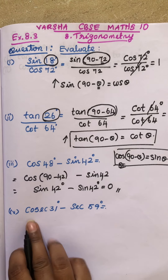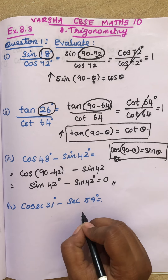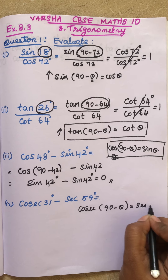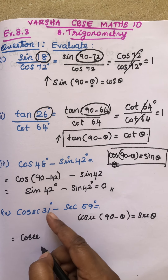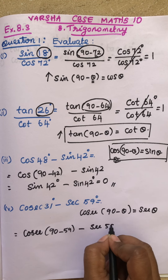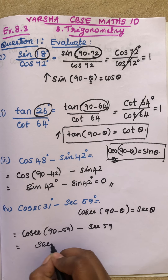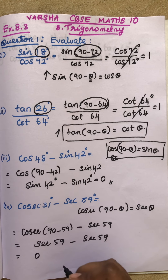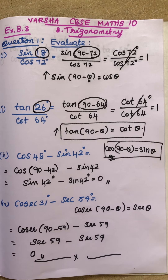Now the fourth question: cosecant 31 minus secant 59. We change cosecant 31 using the formula cosec(90 minus θ) equals sec θ. Write cosecant, and change 31 to 90 minus 59. So cosec(90 minus 59) becomes secant 59. So secant 59 minus secant 59 equals 0. Both are equal, and when you subtract you get 0.